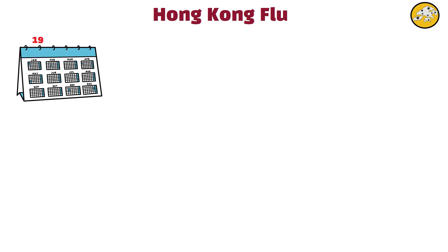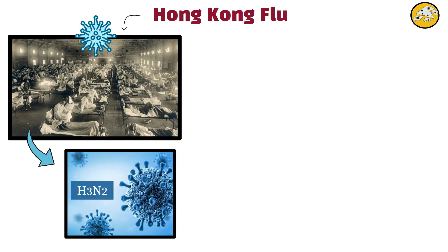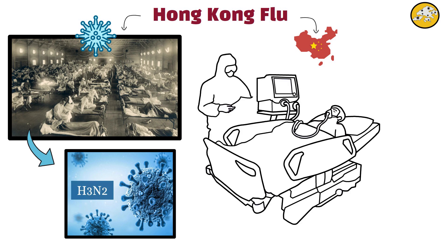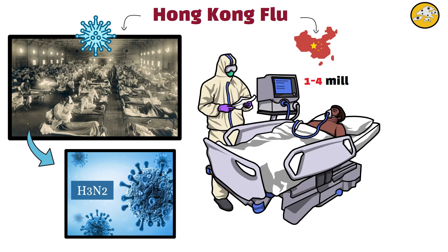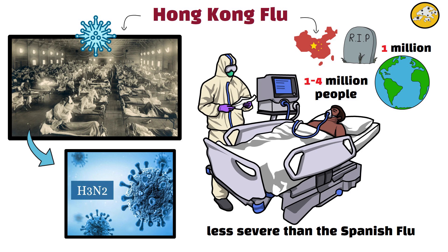Hong Kong flu, 1968 to 1969. The Hong Kong flu was an influenza pandemic caused by the H3N2 virus, which originated in China and spread globally. It infected an estimated 1.4 million people, causing symptoms similar to those of the Asian flu. While less severe than the Spanish flu, the Hong Kong flu still claimed an estimated 1 million lives worldwide. The virus continues to circulate as a seasonal flu strain.